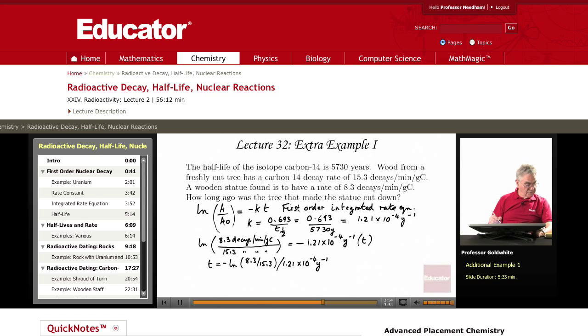Plug those numbers into your trusty calculator. The logarithm is negative, the natural logarithm, negative 0.612.